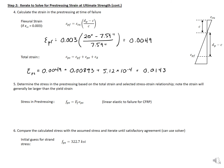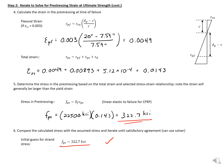Since the stress-strain curve for CFRP strands is linear elastic up until failure, the stress in our pre-stressing is simply the stiffness of the CFRP strands (22,500 ksi) times our total strain (0.0143), which gives a stress of 322.7 ksi. This matches our initial guess, so we're okay. If this value had differed from the initial guess, we would need to iterate again. A solver can be used to handle this iteration automatically.